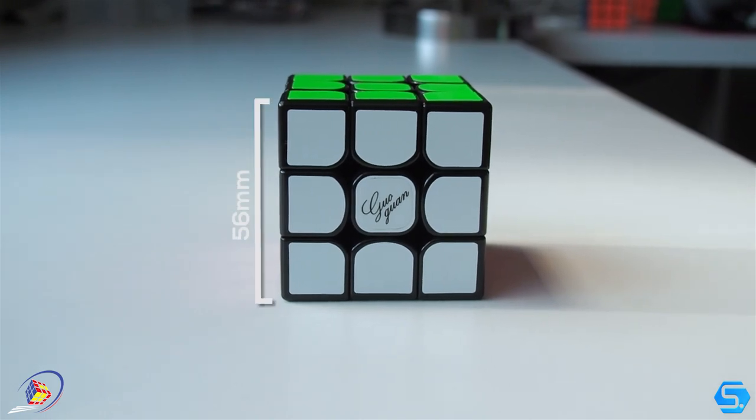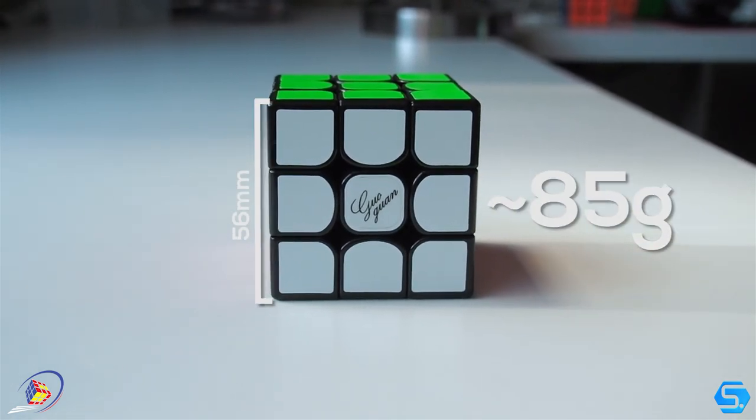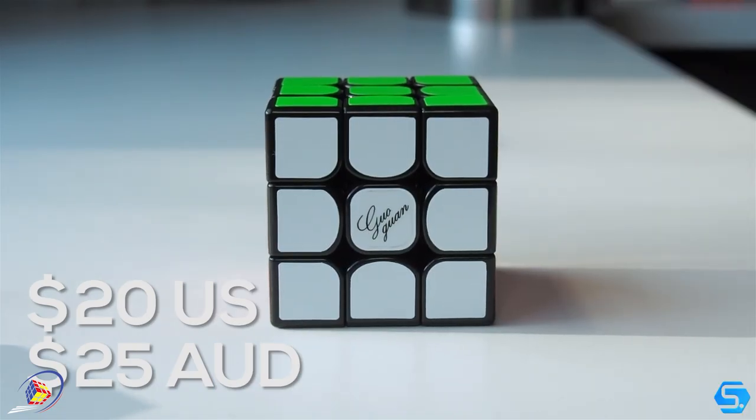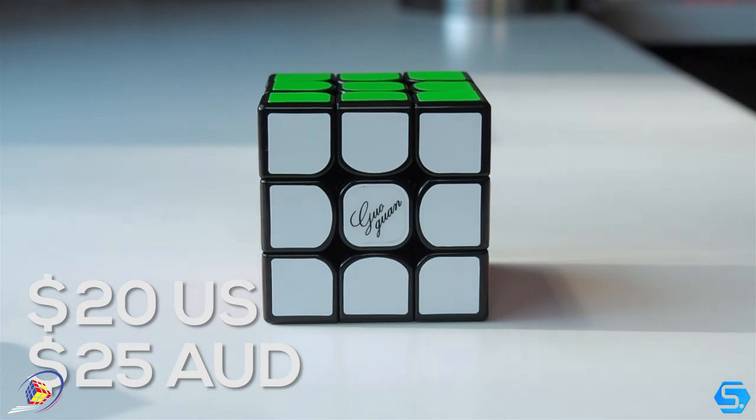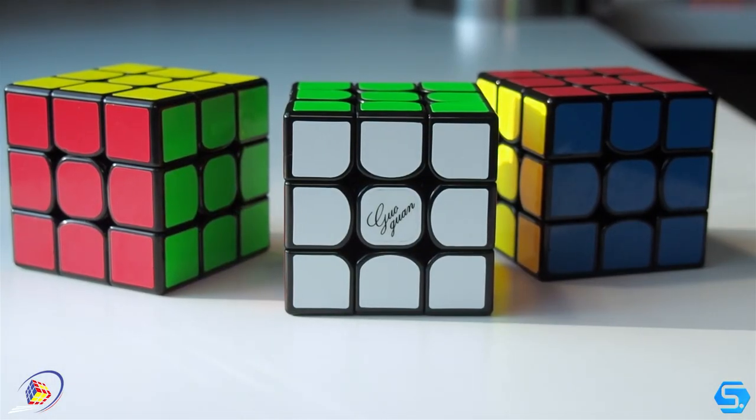The Yuxiao Pro is a 56mm cube and weighs 85g or thereabouts. It's also $20 US or just under $25 Australian at speedcube.com.au, placing it right alongside other flagships like the GTS 2 or the Valk 3.